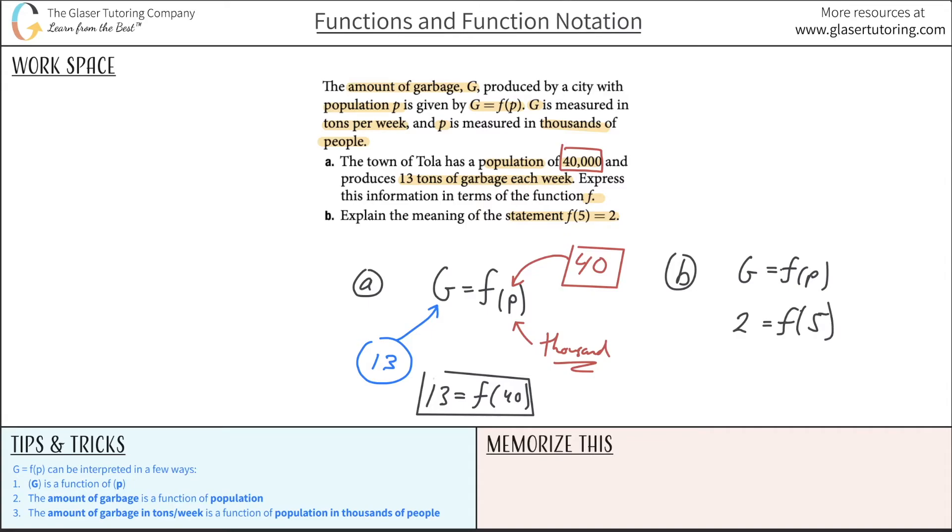Here now we are going to write two is equal to F of five. Remember, let me color code this. The G here is this value in the given equation, and the P here is this value in the given equation. If this is G, then I know that G is the amount of garbage in tons per week. This statement is now saying that there are two tons of garbage produced each week.